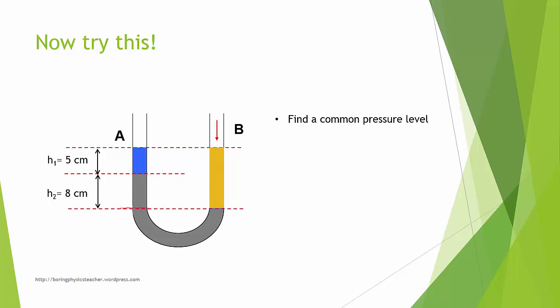In this case, the common pressure level is this level. So this level is a common pressure, which means that whatever is pressing down over at side B and whatever is pressing down on side A here is actually the same.